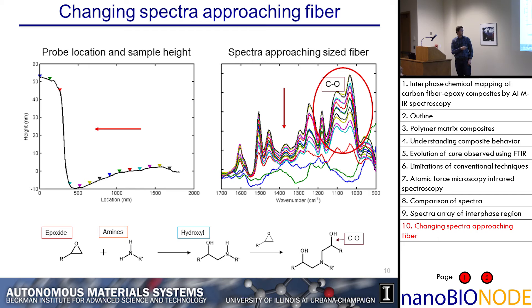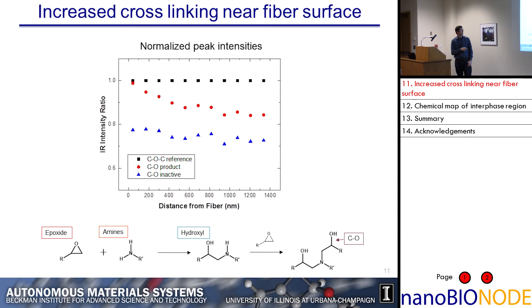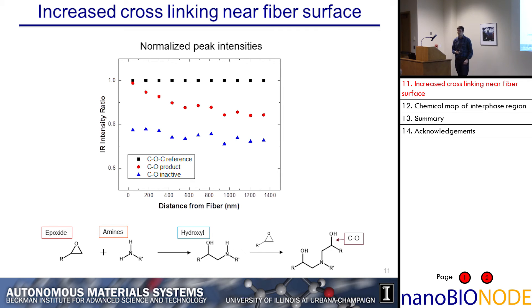If we look at the carbon-oxygen peak that corresponds to the cross-linking product and normalize by a couple of reference peaks, what we see is that relative to the other peaks, we do get an increase in the carbon-oxygen product compared to non-interacting carbon-oxygen stretches.